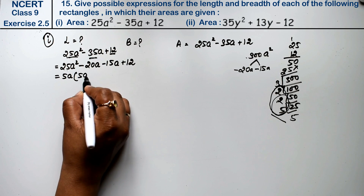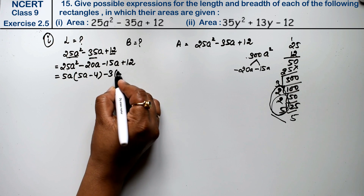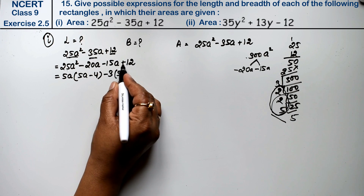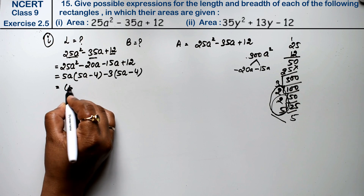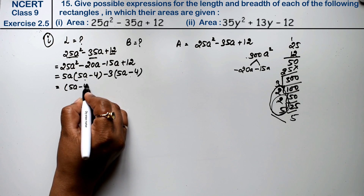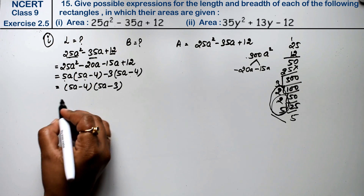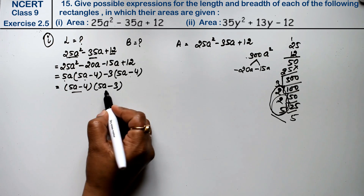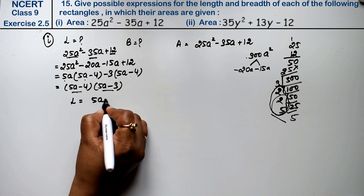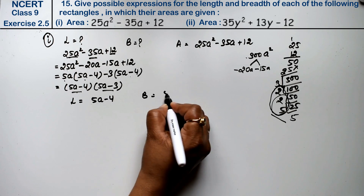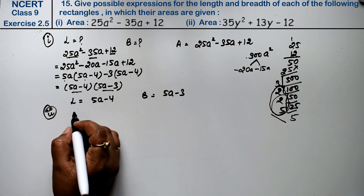Five is common from the first pair, giving 5a minus 4. Three is common from the second pair, giving minus 3, which also gives 5a minus 4. So 5a minus 4 is the common binomial factor. This means our two factors are 5a minus 4 and 5a minus 3. So the length is 5a minus 4 and the breadth is 5a minus 3.